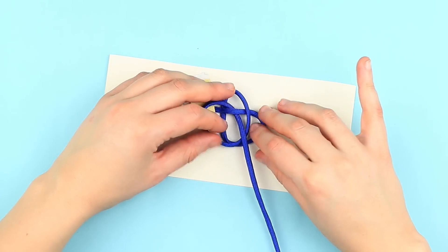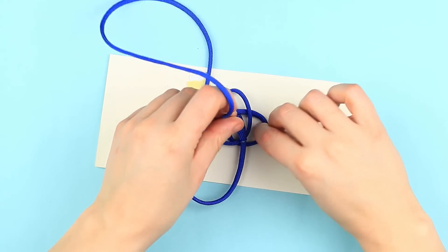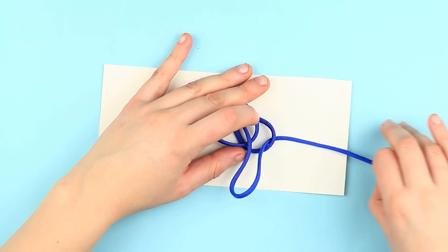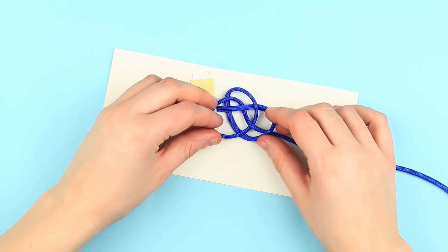Smooth the circles to make them equal in size. Tuck the cord above the central loop and then above the outer one. Form the fourth curl.